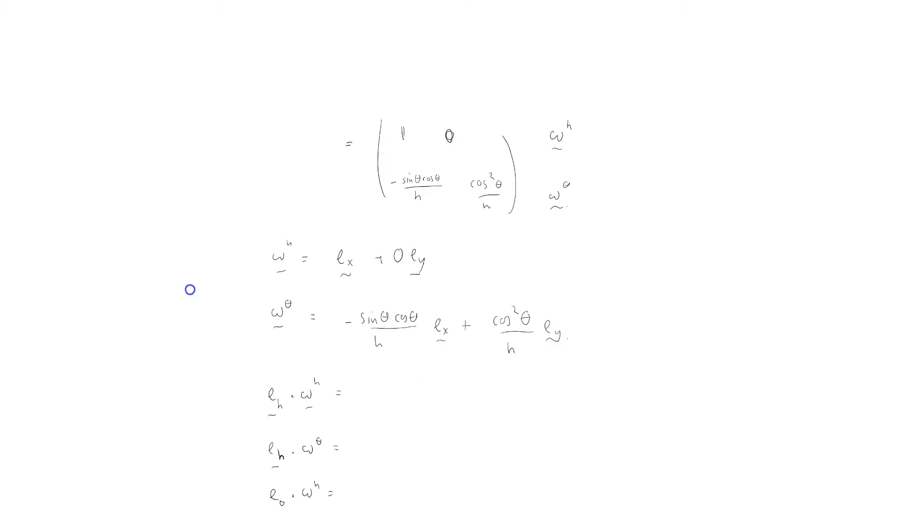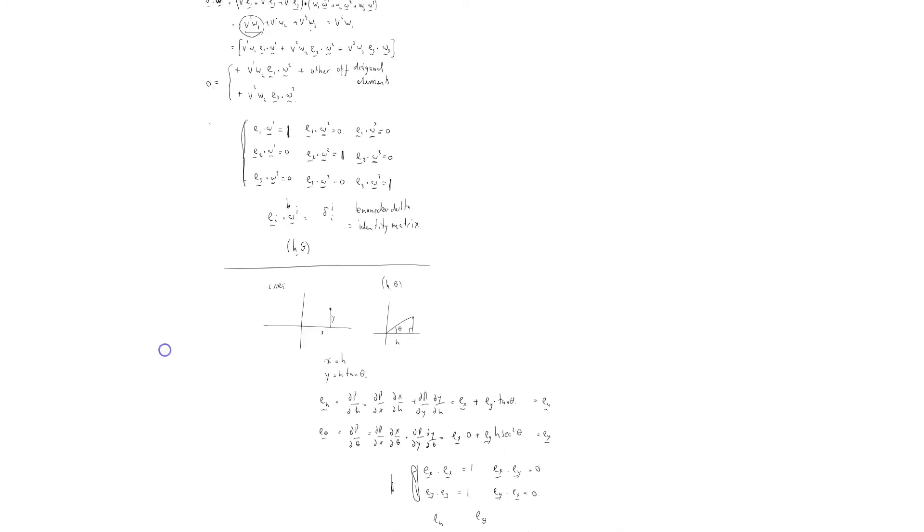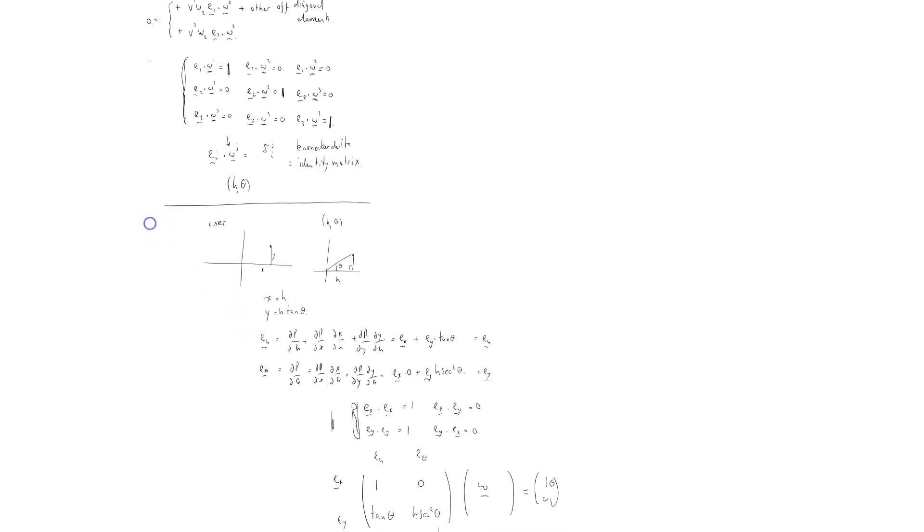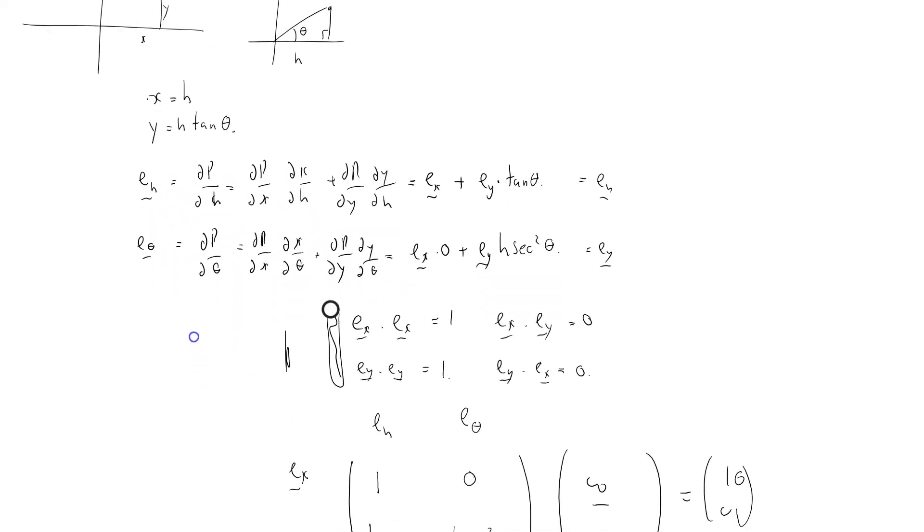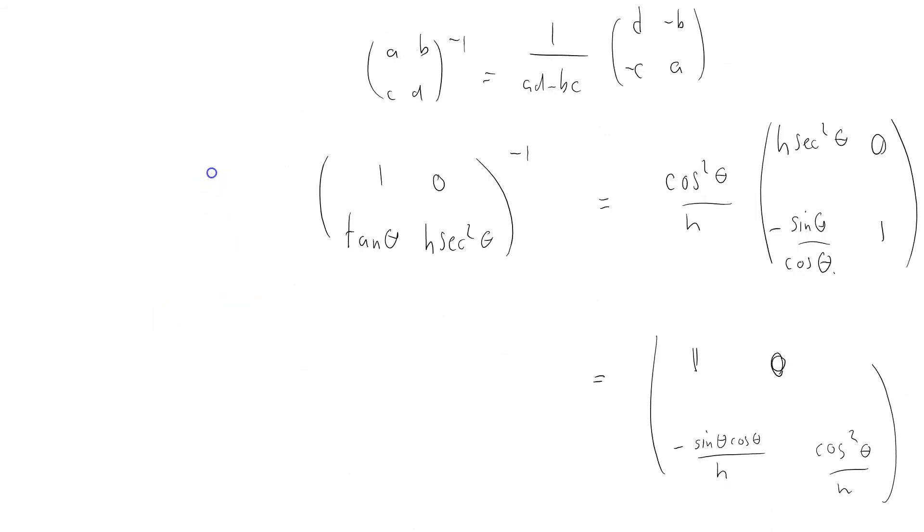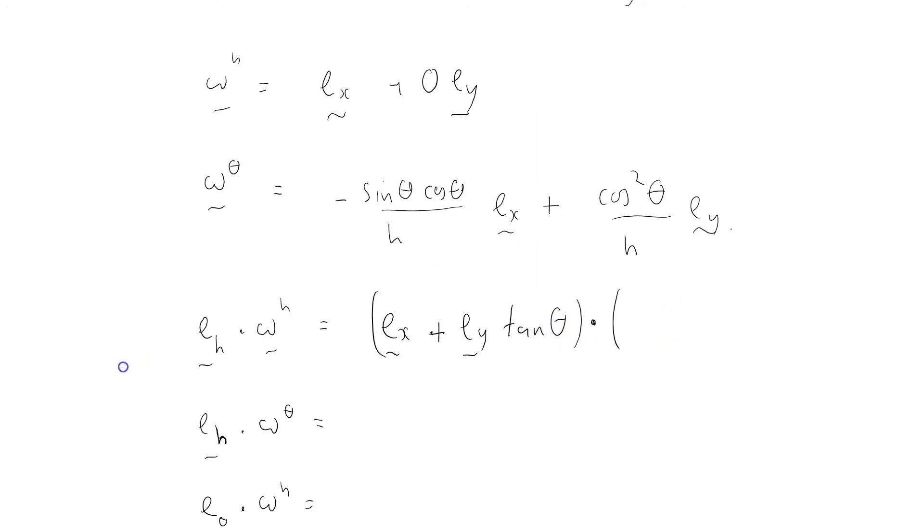So let me just get these down here. E_h is—where's my e_h? Oh, I wrote it down here. Here's my e_h: it's e_x plus e_y tan θ. So that's e_x plus e_y tan θ dot omega h. From here, omega h is just e_x plus the 0, equals 1. Check.